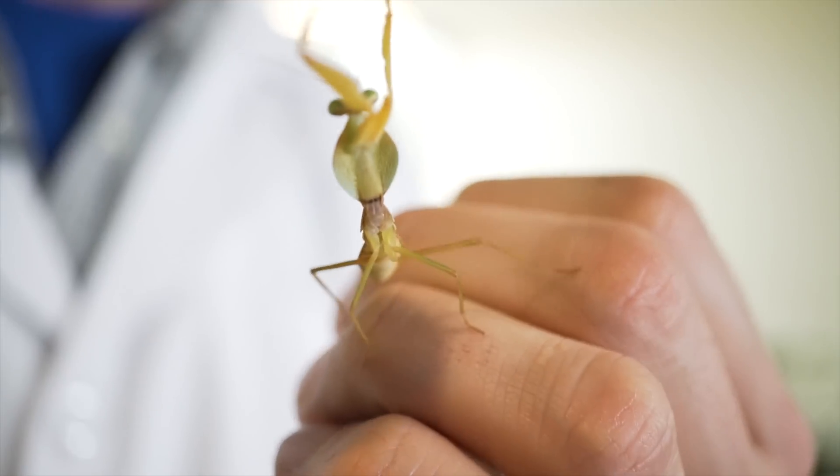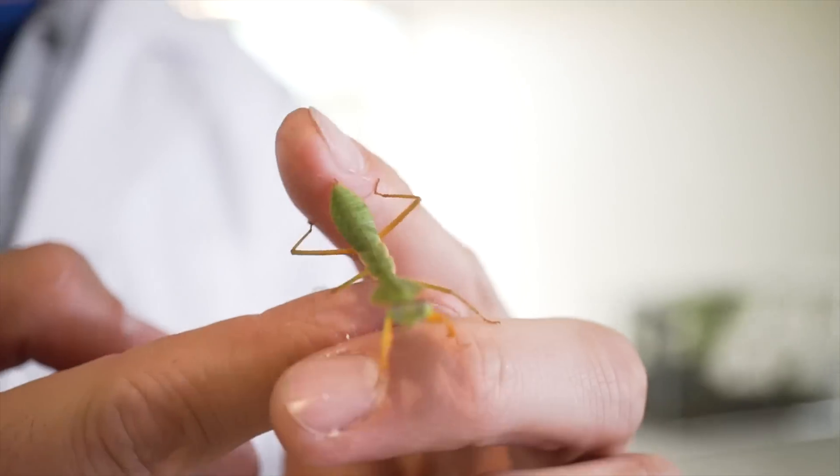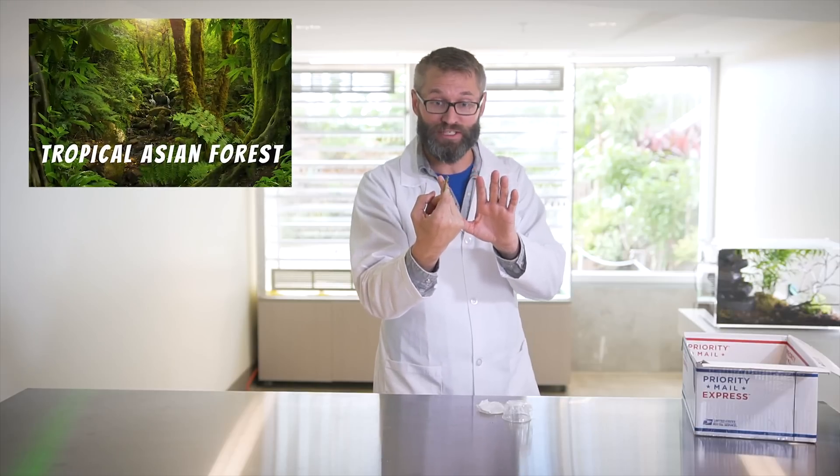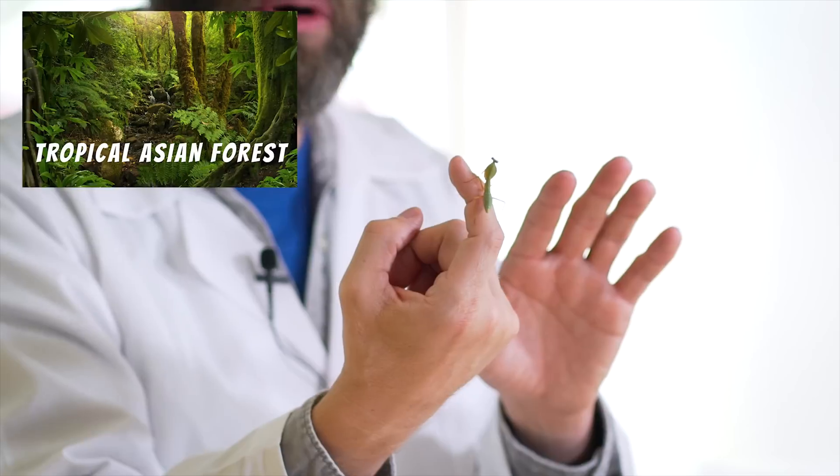They can get up to 12 centimeters long in the wild. So that bright green coloration is going to be great camouflage for these guys because they live in tropical forests in Asia, particularly Malaysia, Borneo, Thailand.